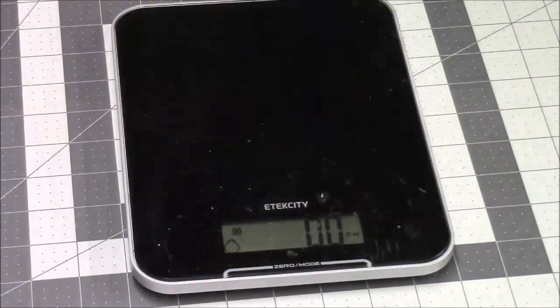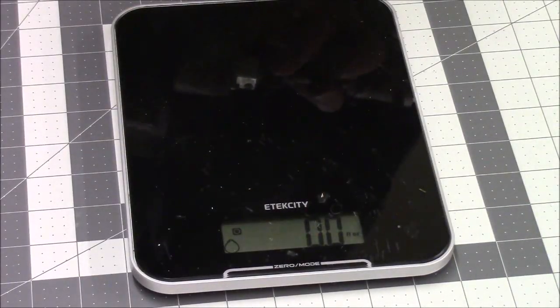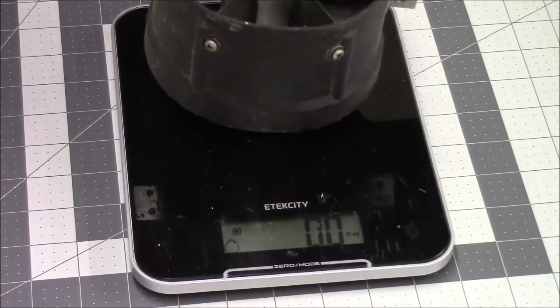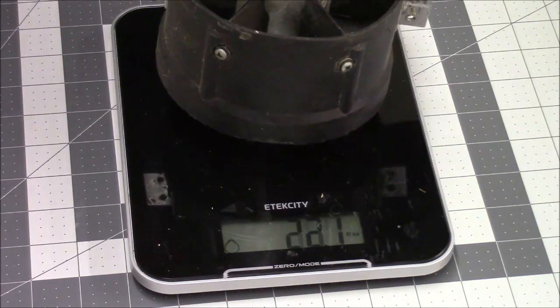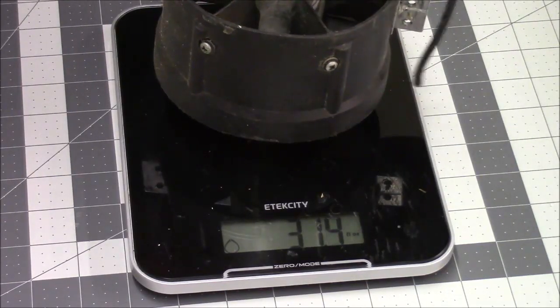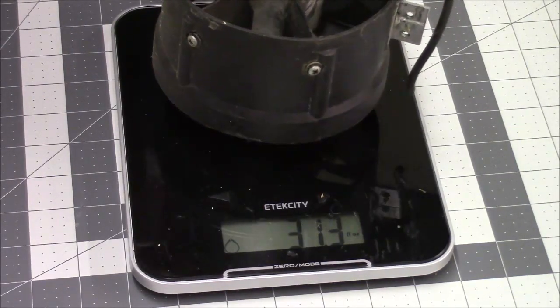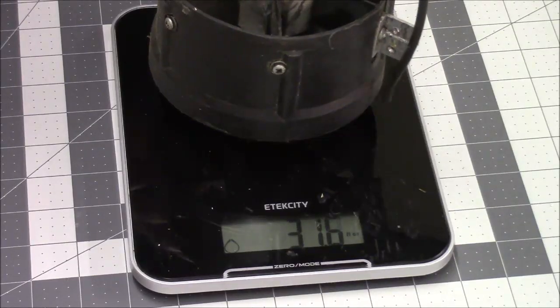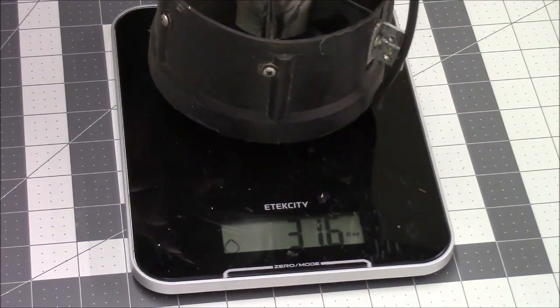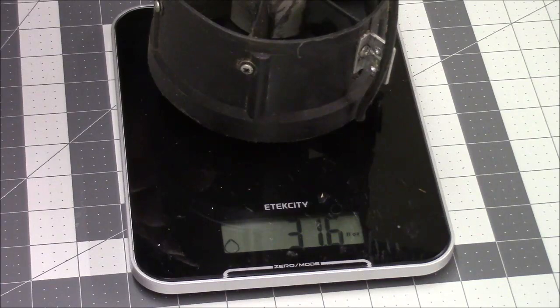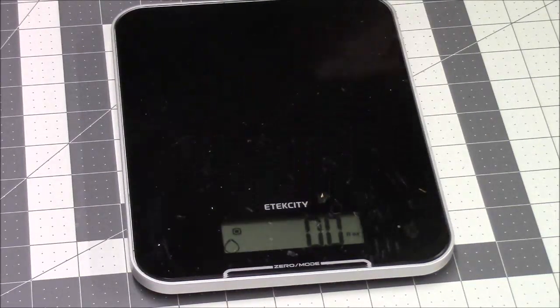As I got into the project, one of the things I wanted to find out was if there's a weight savings going from the glow system to the electric system. So now that the scale has been zeroed, we can put the glow system on here. We're looking at 31.5, 31.6 ounces for the old system with the K&B motor.